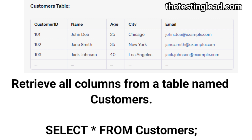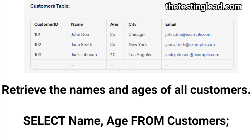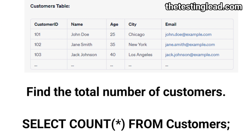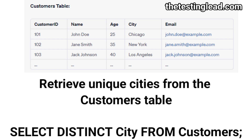Retrieve all the columns from a table called Customers: SELECT * FROM Customers. Remember, SELECT * will return all the columns from the table. Retrieve the names and ages of all the customers: SELECT name, age FROM Customers. Find the total number of customers: SELECT COUNT(*) FROM Customers. Retrieve unique cities from the Customers table: SELECT DISTINCT city FROM Customers.